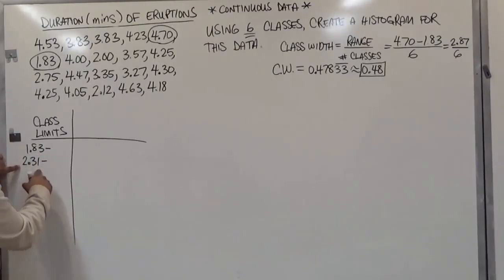Now the next number we're going to have when we add 0.48 is 2.31. Adding 0.48 to this, we get 2.79. If we continue going downwards, we'll see that we get 3.27.